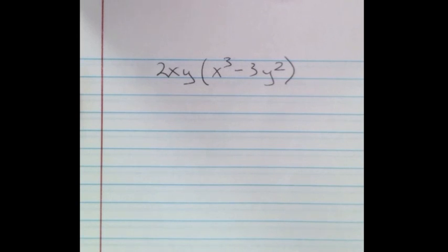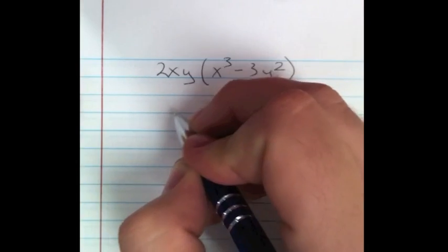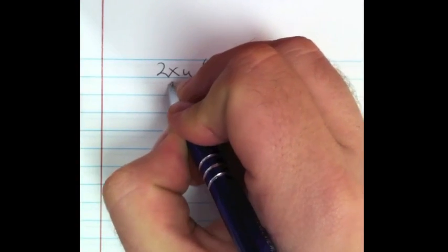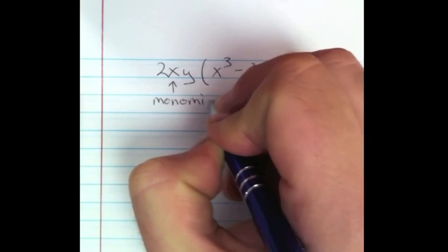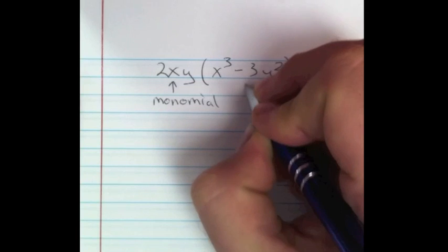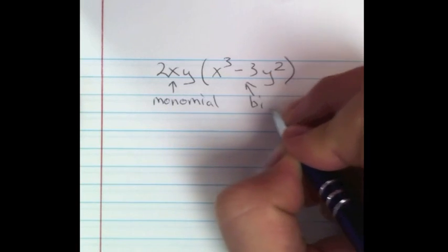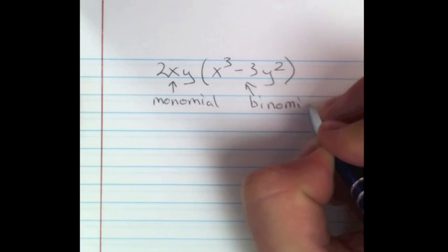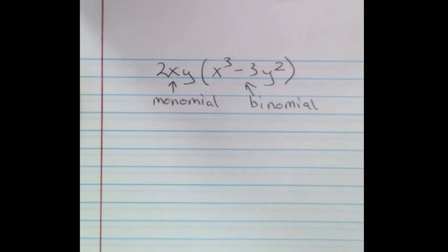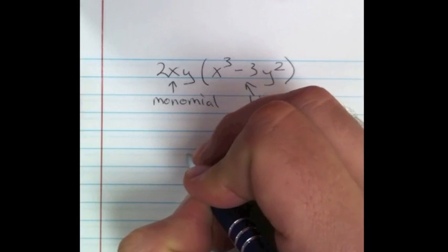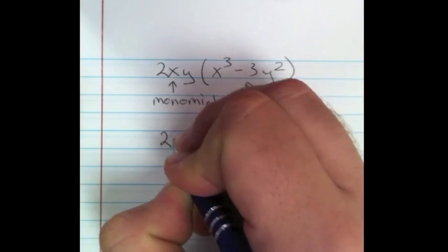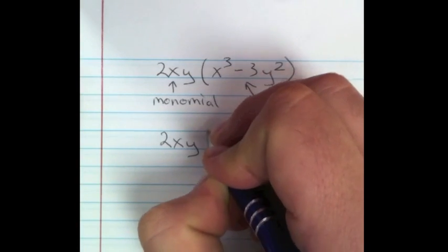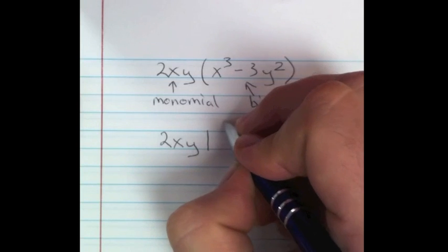In this problem, we are going to multiply a monomial and a binomial using a technique called the box method. It's a cross-curricular technique they use in science with Punnett squares for determining possibilities of different genes in offspring. But in this case, it's not going to be a 2 by 2 square—it's going to be a 1 by 2 square.